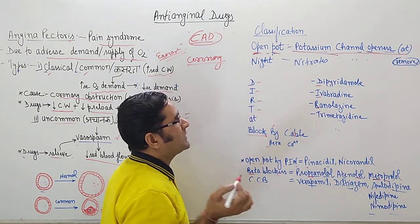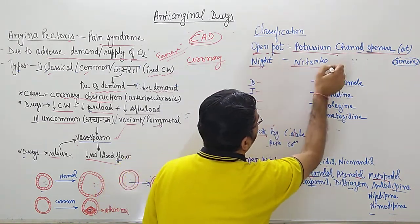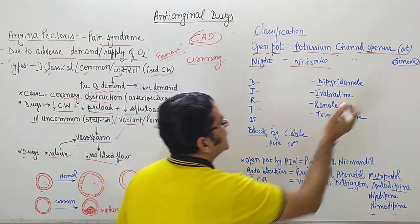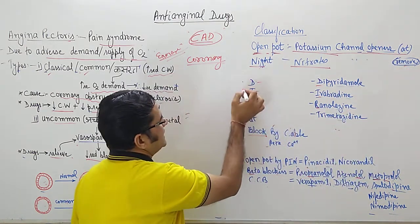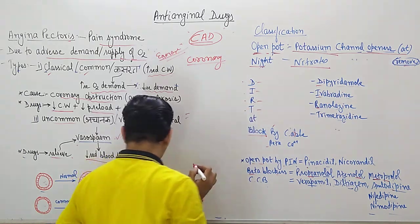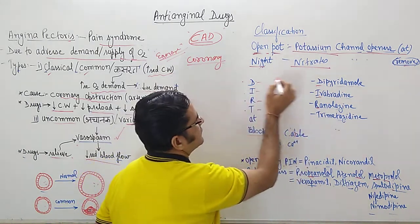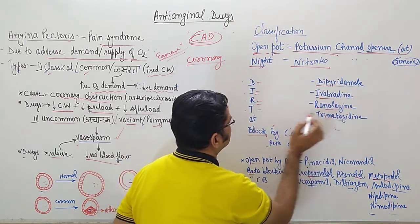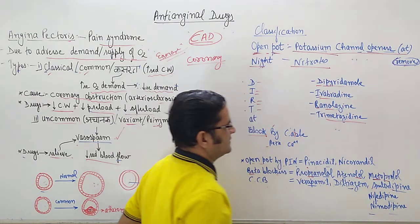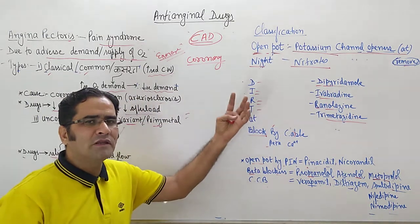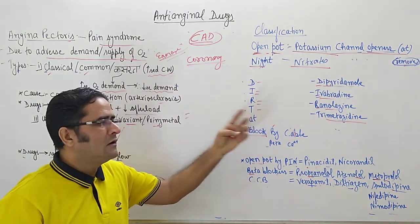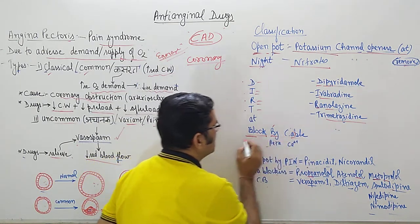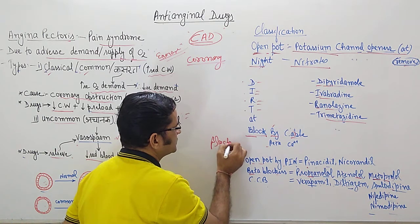Let us decode the mnemonic. 'Open pot' — open means opener, pot means potassium — so this stands for potassium channel openers. 'At night' — night means nitrates: glyceryl trinitrate, erythrityl tetranitrate, and similar drugs. 'Remove dirt' — D-I-R-T: D for dipyridamole, I for ivabradine, R for ranolazine, T for trimetazidine.